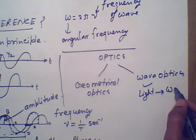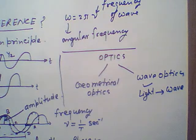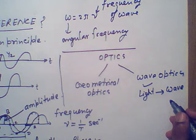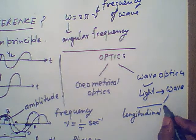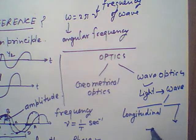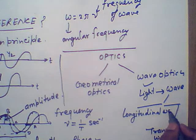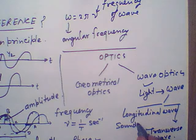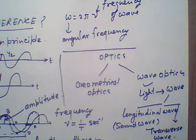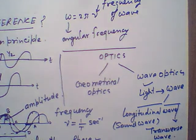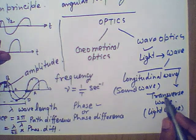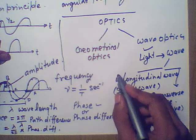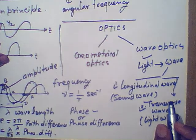In wave optics, light is treated as a wave instead of a ray. Waves are further of two types: longitudinal waves and transverse waves. Sound waves are an example of longitudinal waves, while light waves are an example of transverse waves. What is the difference between transverse and longitudinal waves?